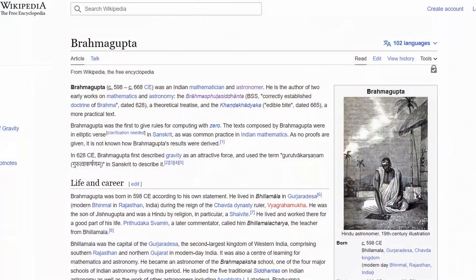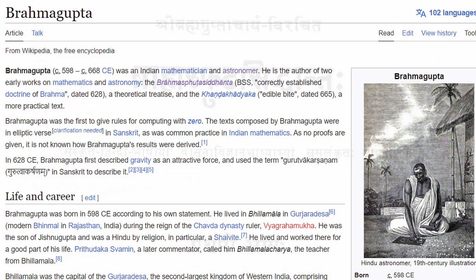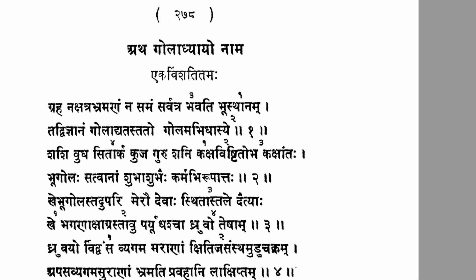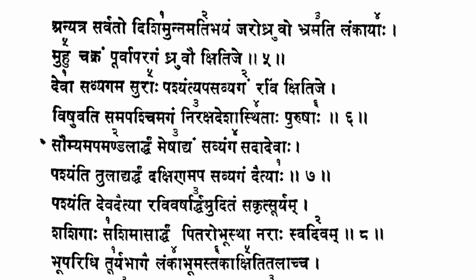Brahma Gupta, a famous Indian mathematician and astronomer, in his book Brahmasputasiddhanta devoted a complete chapter to armillary sphere, also known as Golayantra. Armillary sphere was used as a teaching device and not as a measuring tool.